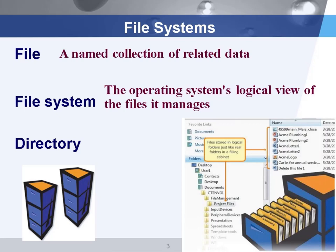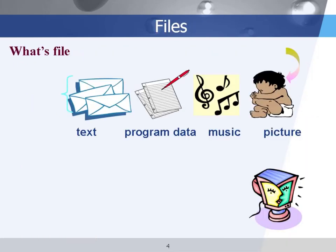The file system is an operating system component that gives users a logical view of the files it manages. A file is a collection of data — the data can be text, a program, music, or a picture or image. All of them are called a file.